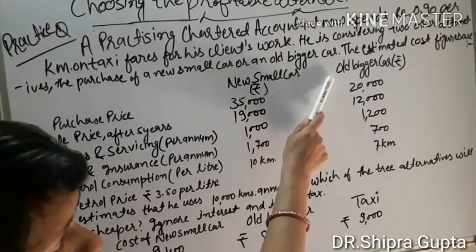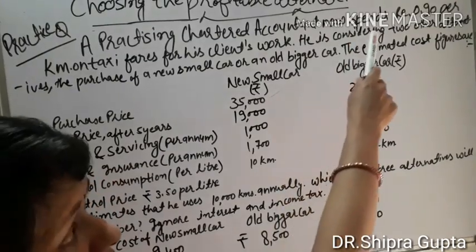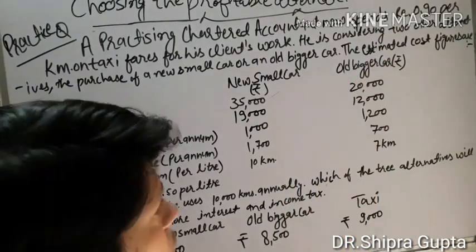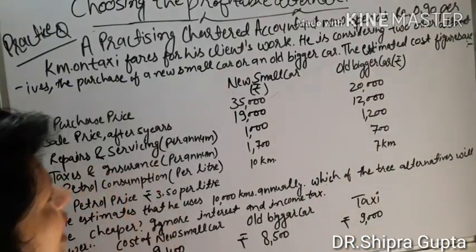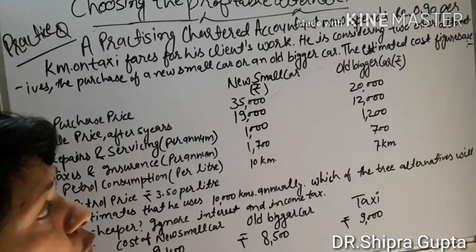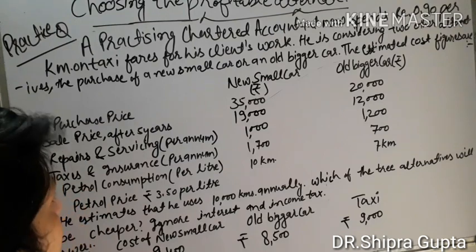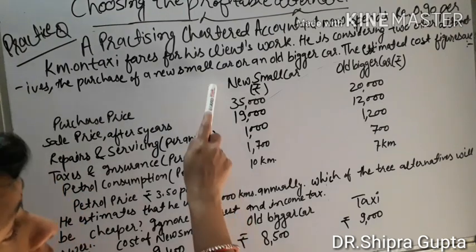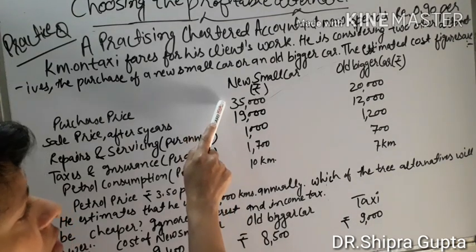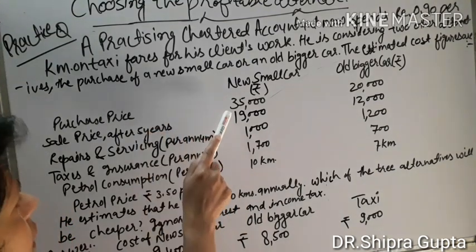You have three alternatives: first, the new small car; second, the old bigger car; and third, the rental-based taxi. In this question, first you will calculate depreciation annually. For the new small car, the cost is ₹35,000 and the purchasing price is given.